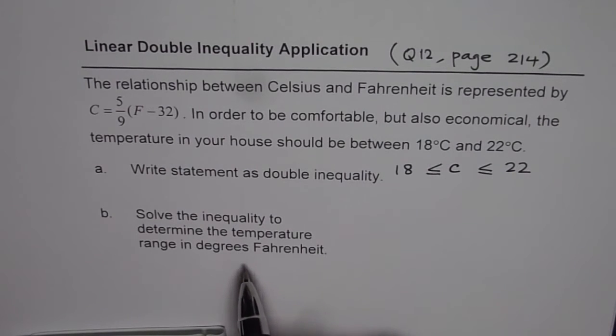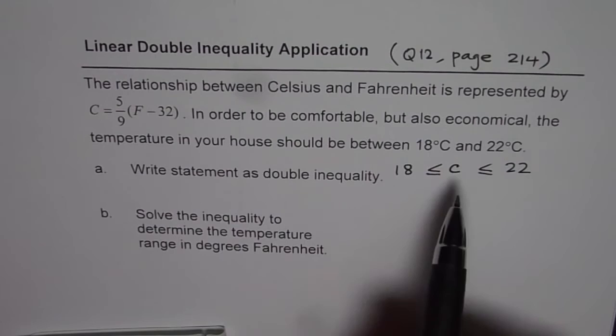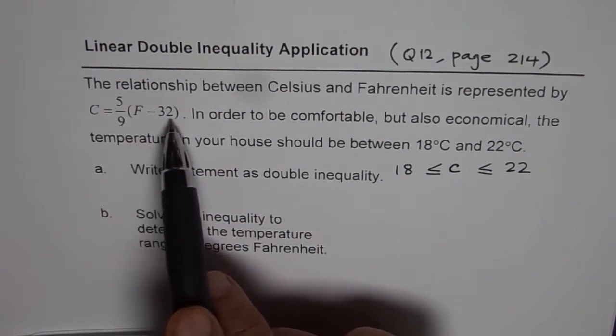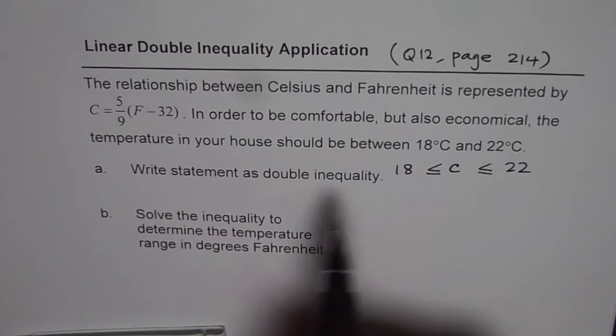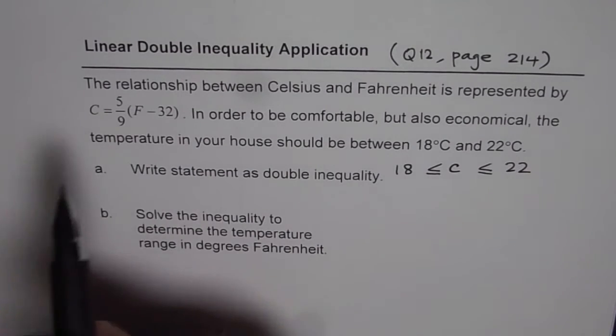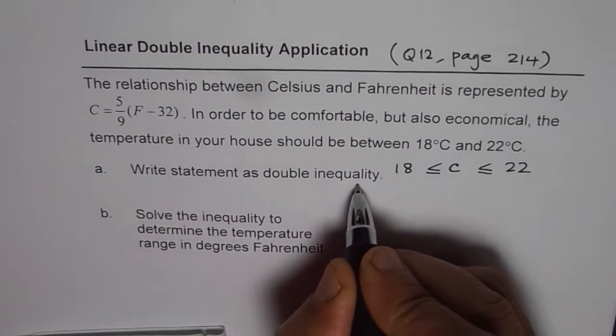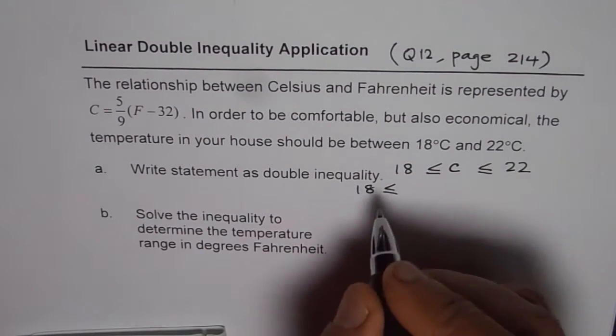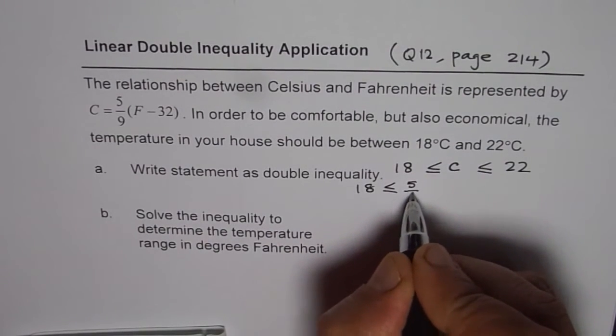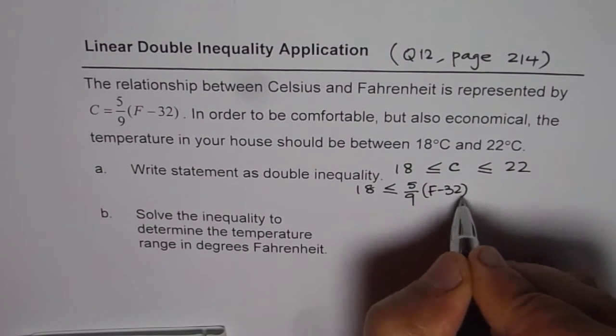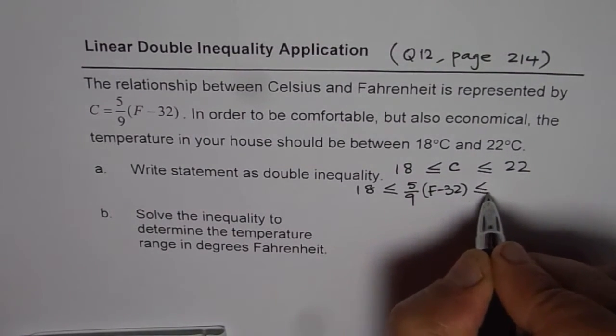In part B, we have to give this range in Fahrenheit. We are given the formula C equals 5 over 9 times F minus 32. So let us replace this C by 5 over 9 times F minus 32 and then solve for F. We get 18 is less than or equal to 5 over 9 times F minus 32, which is less than or equal to 22.